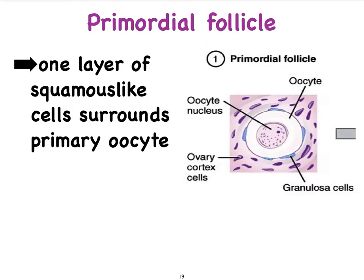Let's now visit each follicle stage in more detail. Most of our follicles remain in the primordial follicle stage. They are very small and contain an oocyte referred to as the primary oocyte. Here we see the nucleus and cytoplasm of the oocyte, surrounded by flat granulosa cells. These granulosa cells will start to grow and eventually divide, which leads us to the next stages of our follicles.